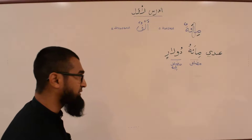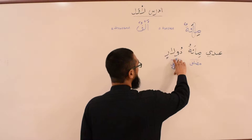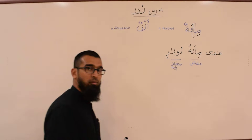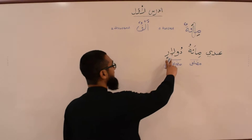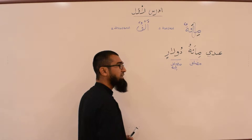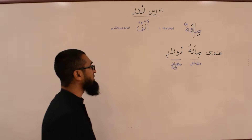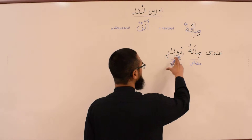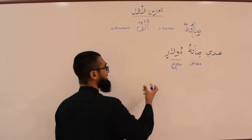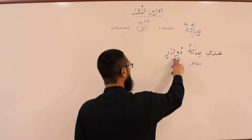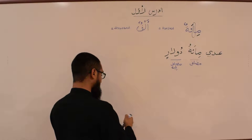However, there are some differences. One, we notice that the word Dular stays in the Nakira form — it's Nakira. Two, it stays in the singular — it's Mufrad; it's not Dularat as we'll see in other examples. So it's Majroor, Nakira, and Mufrad. It's Majroor because it's Mudaafun Ilayhi, Nakira because that is the rule, and Mufrad — Mudaafun Ilayhi.